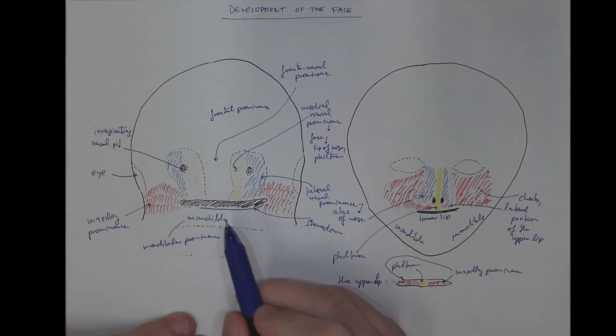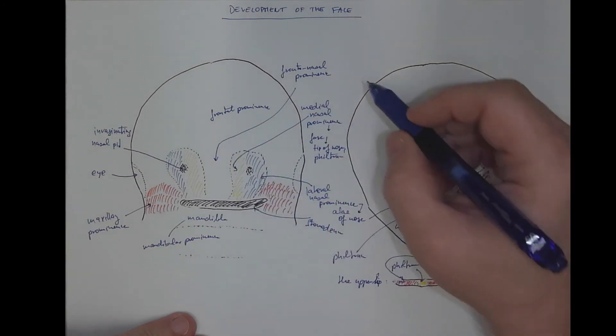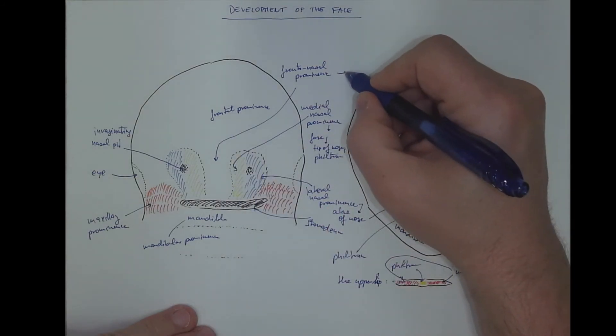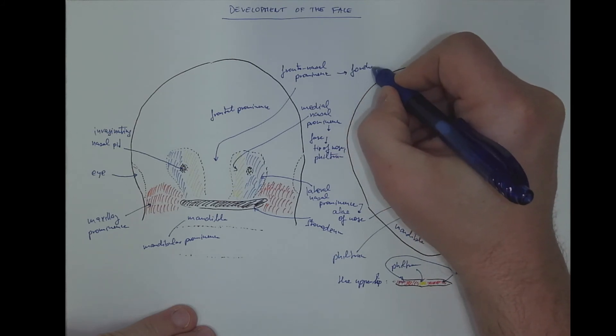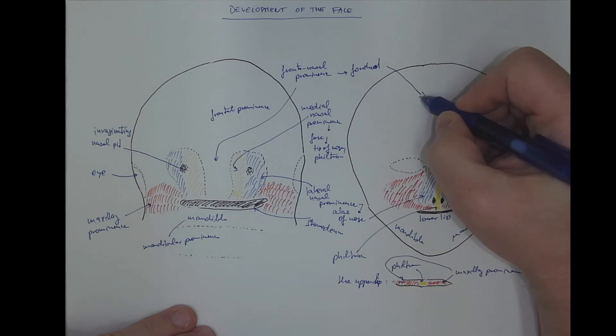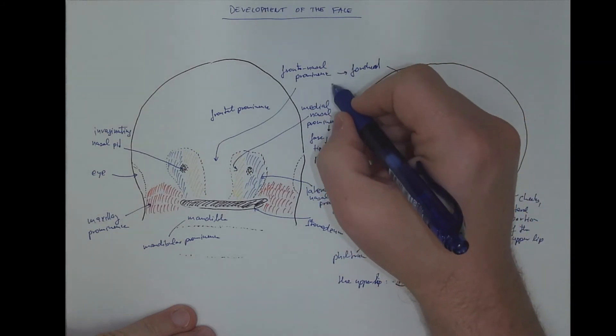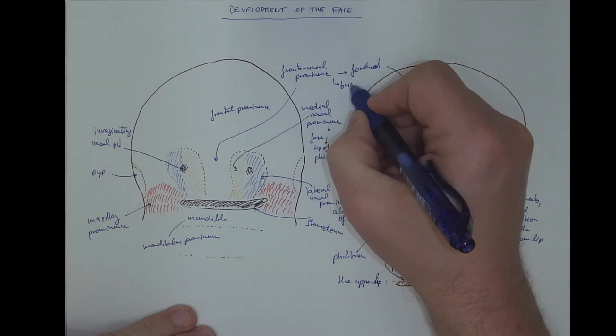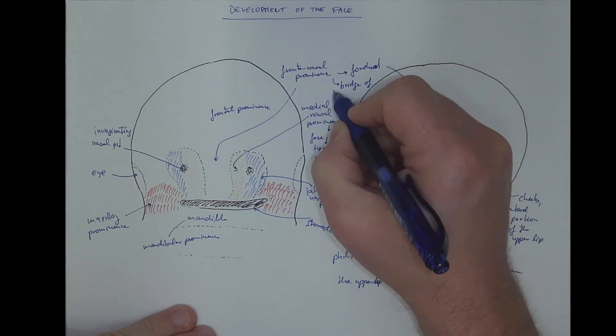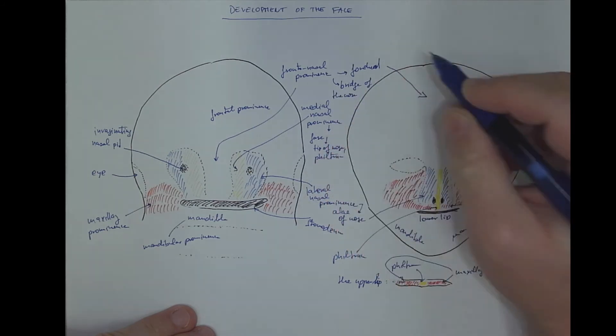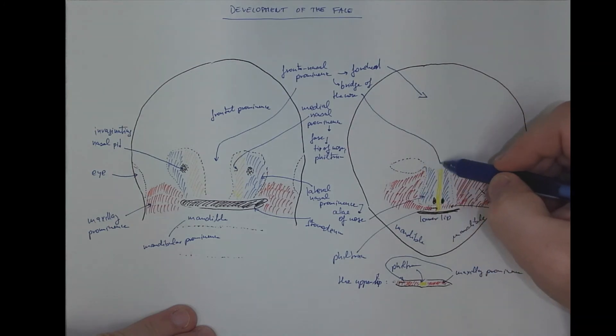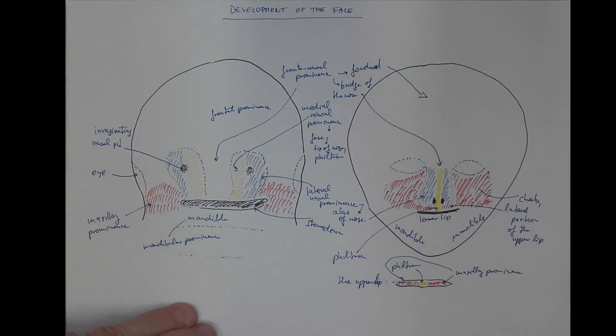And the nasal pits will become the nostrils. The frontal nasal prominence will form the forehead and the bridge of the nose.